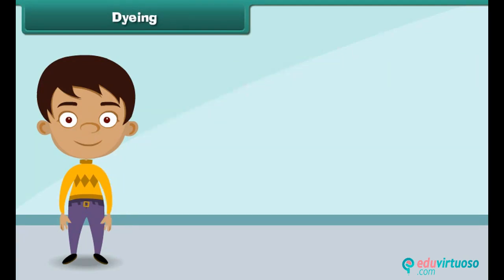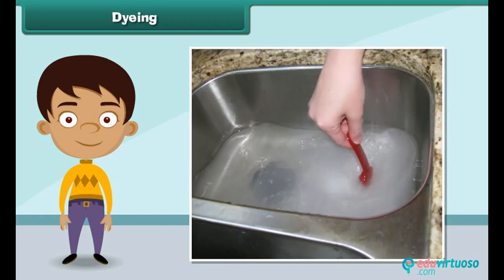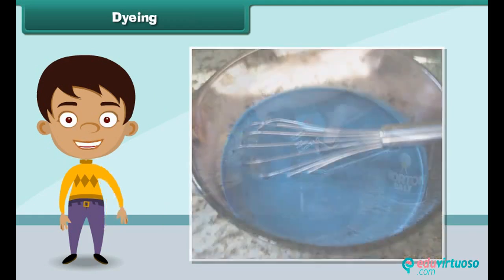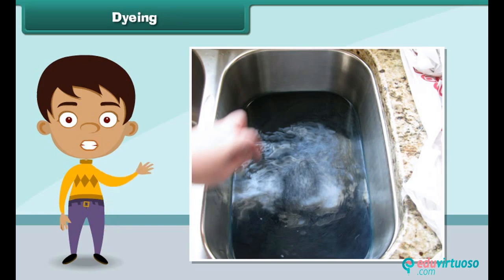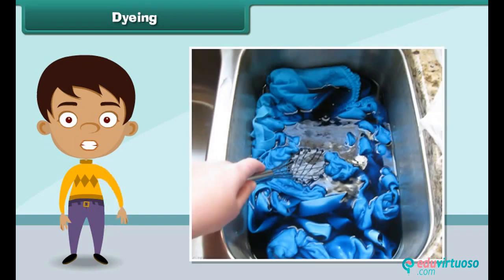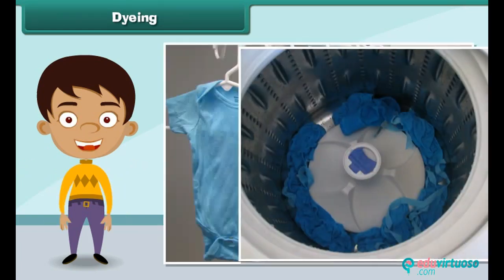Dyeing a fabric means giving a new color to the fabric. To dye a fabric, first a solution of dye and salt in warm water is prepared. Next, the fabric is dipped in the solution. Then the fabric is removed from the solution after an hour and washed. Finally, the fabric is dried.